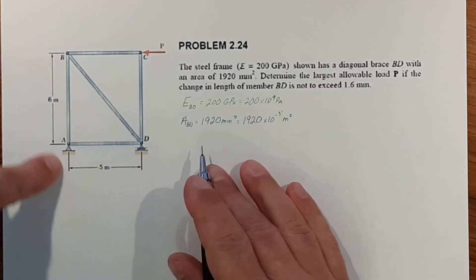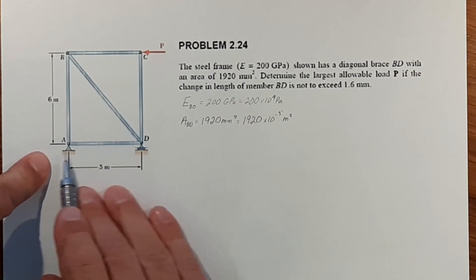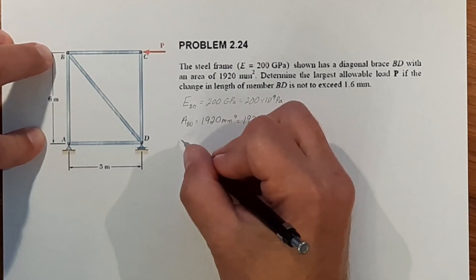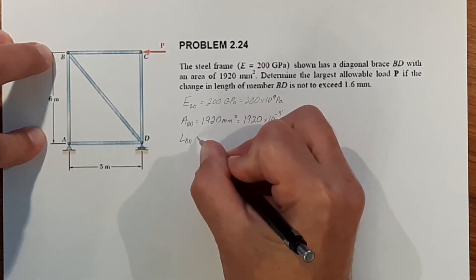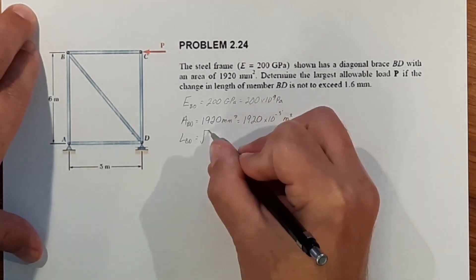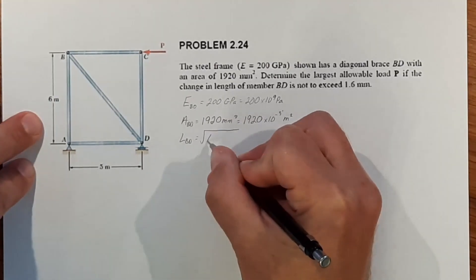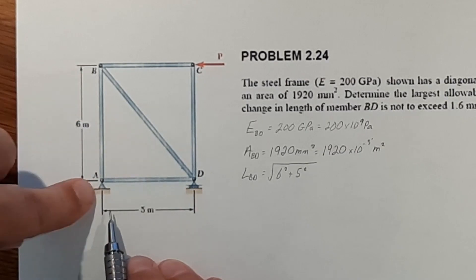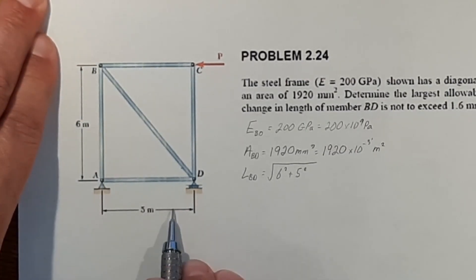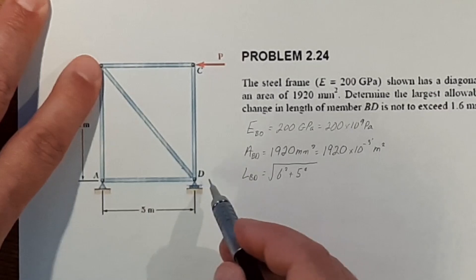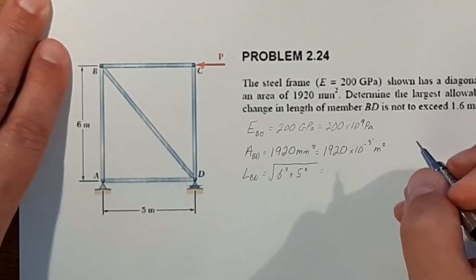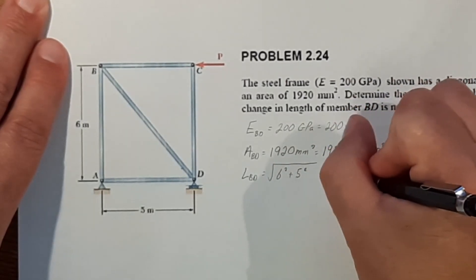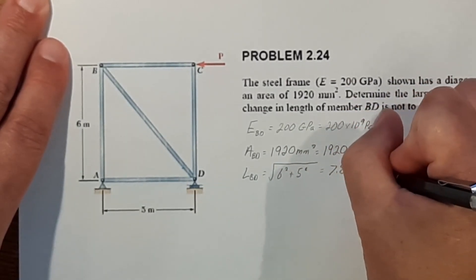What else do we know? We know the height and we know the width. So from knowing these two values, we can figure out the length of BD. And that is using Pythagorean theorem. So 6 squared plus 5 squared. The square root of this length squared plus this length squared is going to give you the length of BD, and that will equal 7.81 meters.